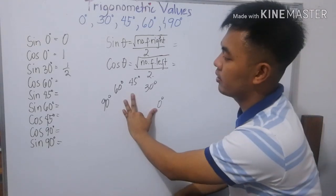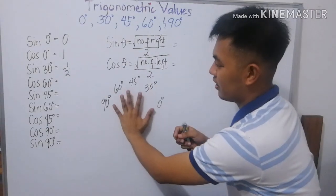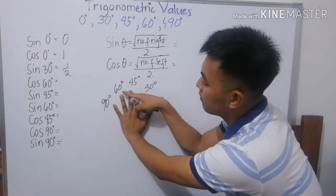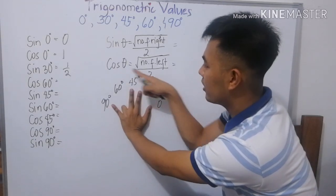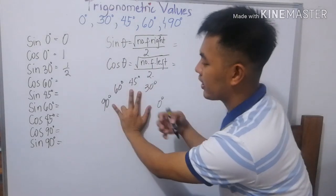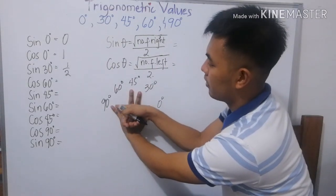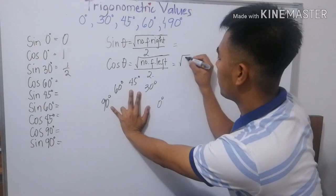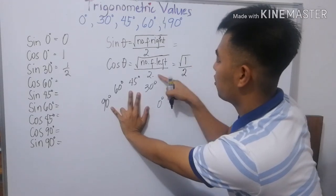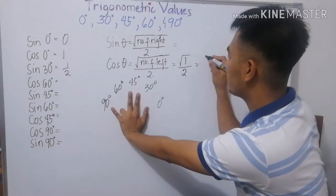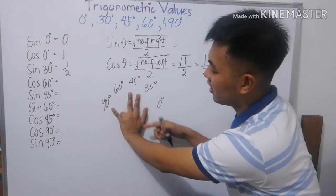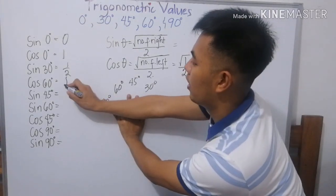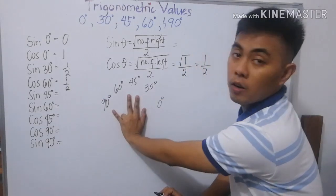Okay. Cosine 60. Kung cosine 60 ang ginamit ng angle, 60 degrees. O, pili mo yun, 60. Cosine, number of fingers to the left. Ilan ang natin sa kaliwa? Isa. Square root of 1 over 2. Square root of 1 is 1 over 2. So, cosine 60 is 1 half.